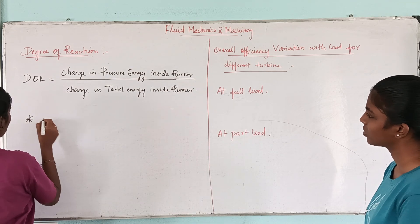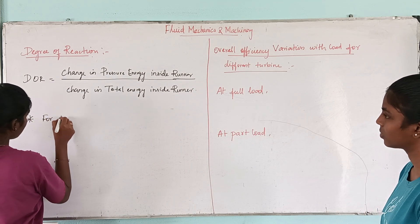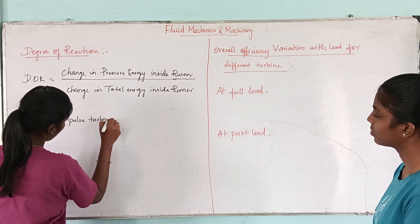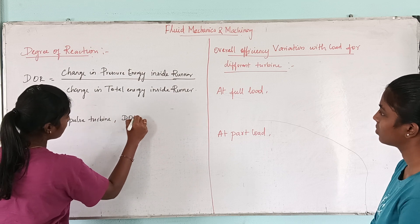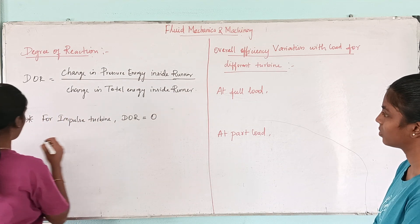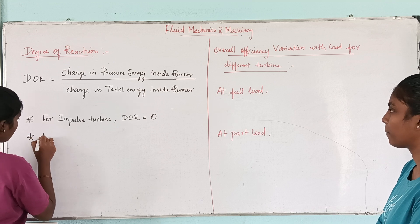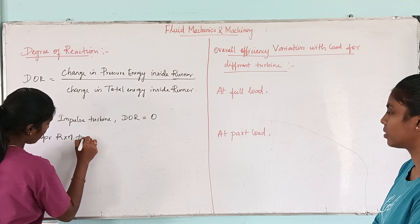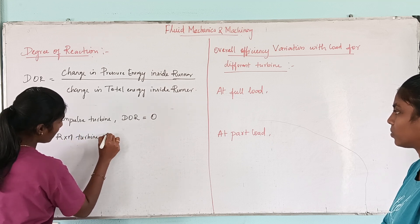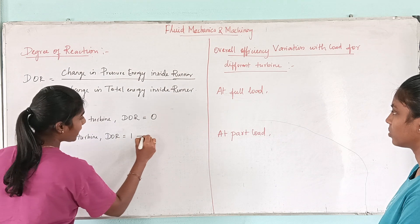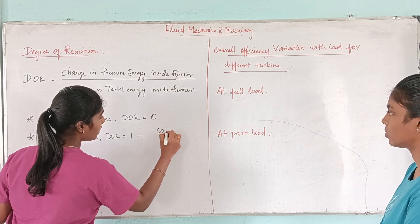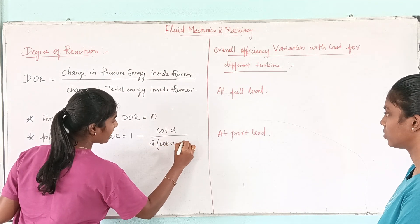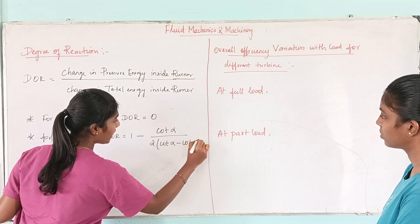For impulse turbine, the degree of reaction is 0. And for reaction turbine, the degree of reaction formula is: 1 minus cot alpha divided by 2, into cot alpha minus cot theta, into power.